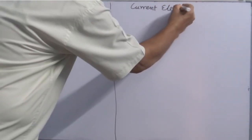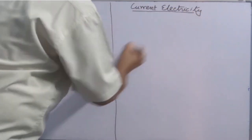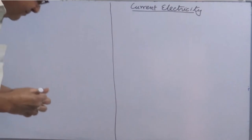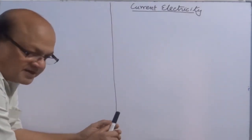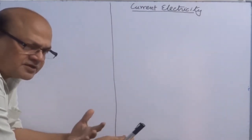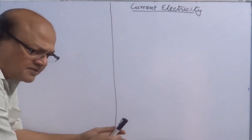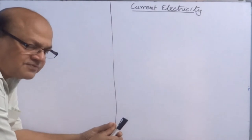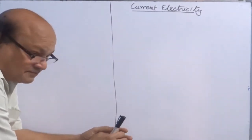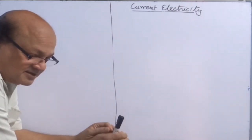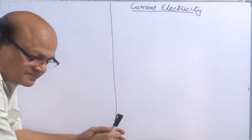Current Electricity. What is current, and when does current flow through a conductor? If you take a normal copper wire lying on a table and touch it, you will not find any kind of current. But once you connect it to an EMF source — a potential difference source — current flows through it.